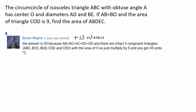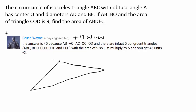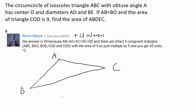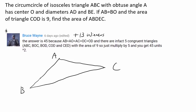The question is: the circumcircle of isosceles triangle ABC with obtuse angle A. So we know angle A is obtuse. Let's draw ABC like this. And because we have an obtuse triangle, we know the circumcenter is going to be outside the triangle.